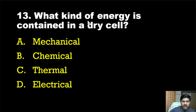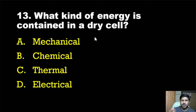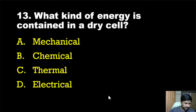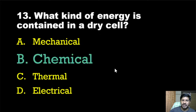Thirteenth question: What kind of energy is contained in a dry cell? A dry cell is the common battery used in clocks and remote controls. Options are: mechanical, chemical, thermal, electrical. The correct answer is option B, chemical energy. When connected to a device, the chemical energy is converted into electrical energy due to electron difference.